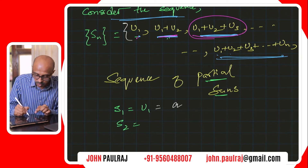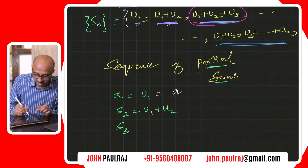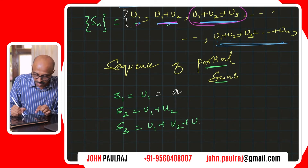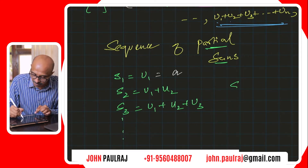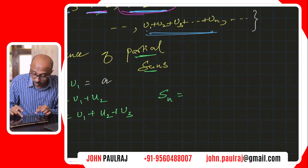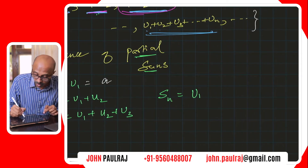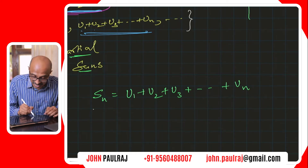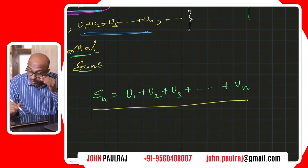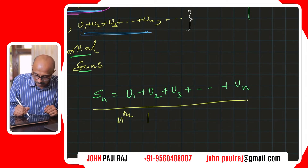The second partial sum is U1 plus U2. The third partial sum, S3, is going to be U1 plus U2 plus U3. And in that fashion, as we go on and on, SN — the general term, the Nth term of the sequence of all partial sums — is U1 plus U2 plus U3, adding up all the first N terms. This sum of the first N terms of the original sequence UN is called the Nth partial sum.